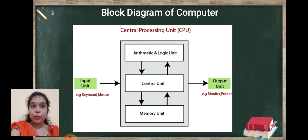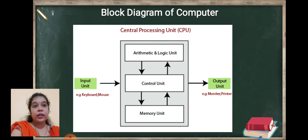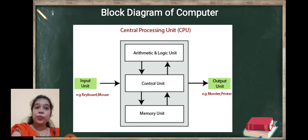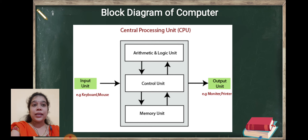Input unit provides input to CPU, and CPU processes it and gives output to the output unit, which we can see. Now what is input unit? Input devices through which we insert data to the computer — that is the keyboard, mouse — these are the input units. What is output unit? Monitor, printer, or visual display unit — these are the output units, which are devices we use to see the output.